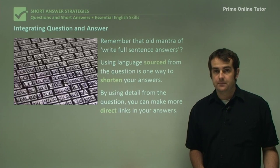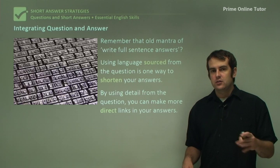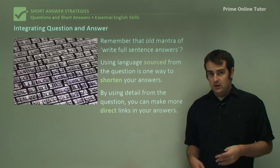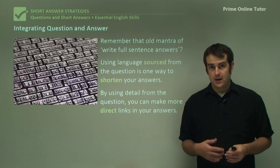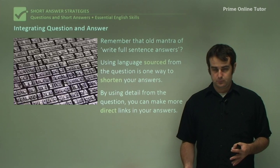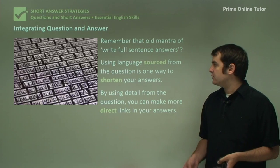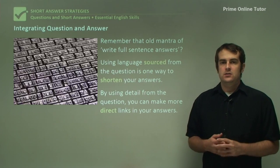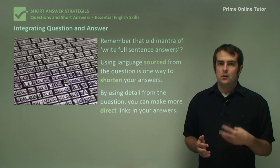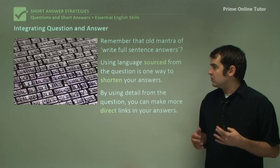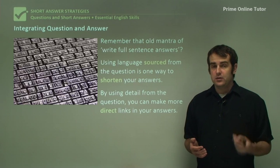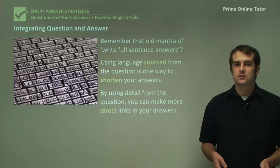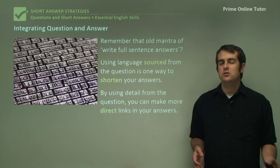If you use different language or write a very creative opening, you're going to spend a lot of time trying to justify why that's there, why it's necessary, and then justify your explanation and discuss how it answers the question. Getting in the habit of using language from the question is a good way to make sure you're actually addressing it. Just make sure that when you answer you are using detail, making a direct link — and that will help to shorten your answers. You don't need to continue explaining the terms you're using.